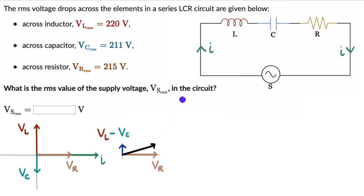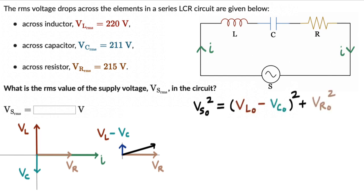Why don't you pause the video and write an equation for the resultant supply voltage. Hopefully you have tried it. The equation looks like this: using the Pythagoras theorem, the peak source voltage squared equals (V_L₀ minus V_C₀) squared plus (V_R₀) squared.